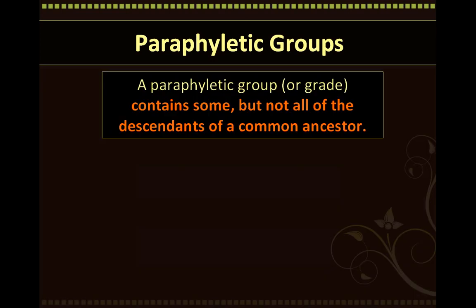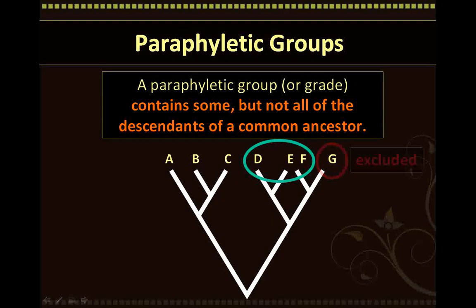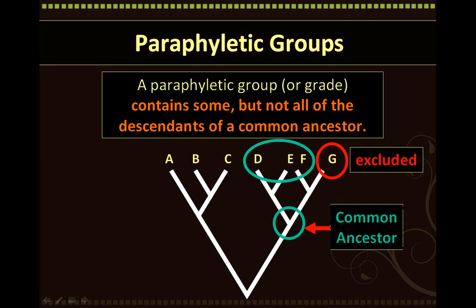A paraphyletic group, also known as a grade, contains some but not all of the descendants of a common ancestor. In this phylogenetic group, suppose we classify D, E, and F to be part of a group. Although we have correctly identified D, E, and F as being closely related, we have failed to include G in the same group, although it comes from the same common ancestor. This would create a paraphyletic group because G, although being a descendant of the same ancestor, was not included in the group. So why was G not included?